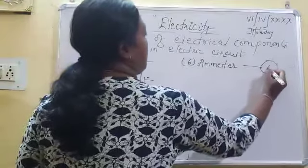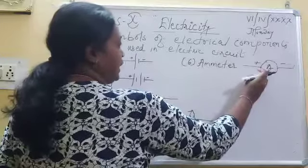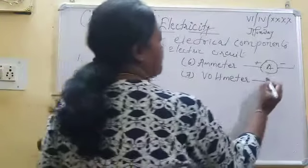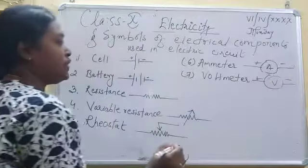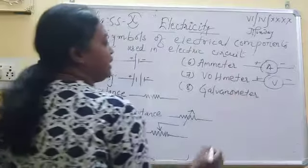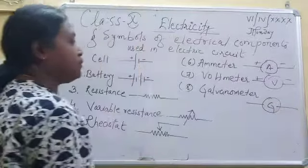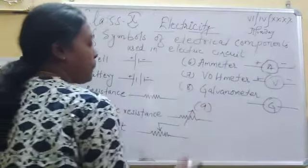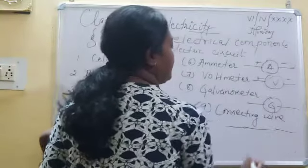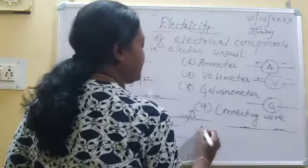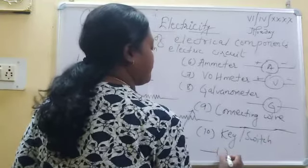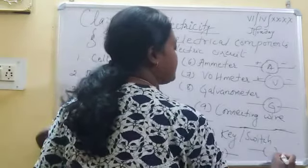Ammeter — this is the ammeter. 'A' is used for ammeter. Next is the voltmeter. Voltmeter is represented with 'V'. Next is the galvanometer. Galvanometer is represented as — 'G' is used for galvanometer. Next is the connecting wire — this is the connecting wire. Next is key or switch: this is the closed key with a dot, and this is the open key.